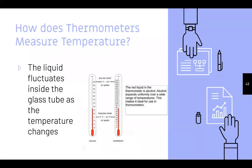How do thermometers measure temperature? The liquid fluctuates inside the glass tube as the temperature changes. That red liquid is alcohol. Alcohol expands uniformly over a wide range of temperatures, which makes it ideal for use in thermometers.